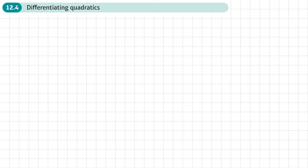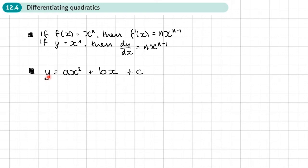This is the fourth section of chapter 12 on differentiation, and this section is about differentiating quadratics. These are the rules you already know about finding the derivative from the previous section. Now, what we're interested in particular is what happens if I were to differentiate something like this, which is a quadratic.